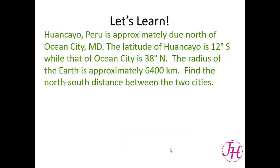Huancayo, Peru is approximately due north of Ocean City, Maryland. The latitude of Huancayo is 12 degrees south while that of Ocean City is 38 degrees north. The radius of the earth is approximately 6,400 kilometers. Find the north-south distance between the two cities.